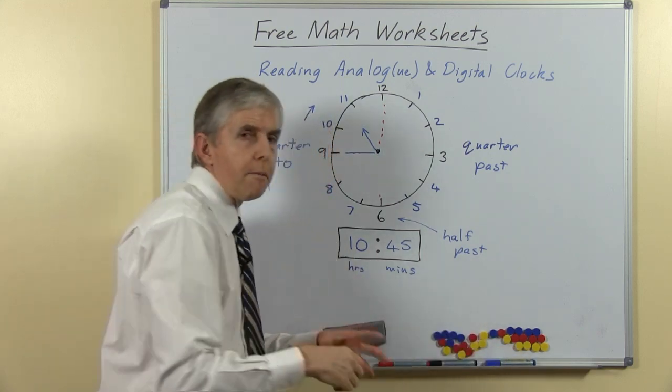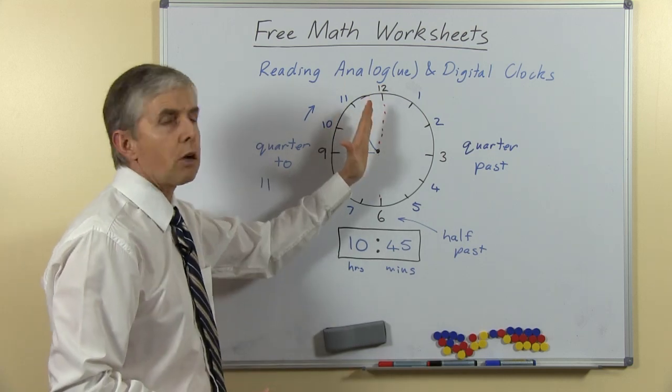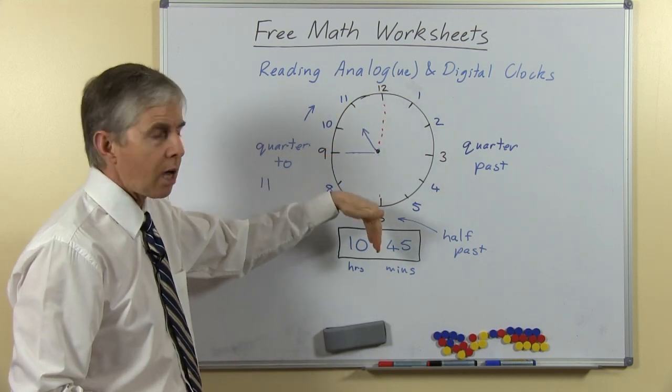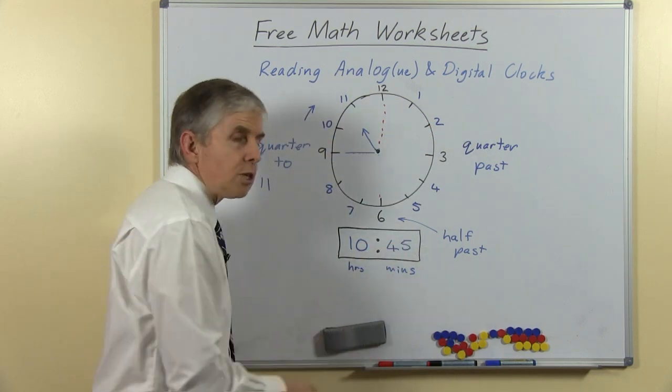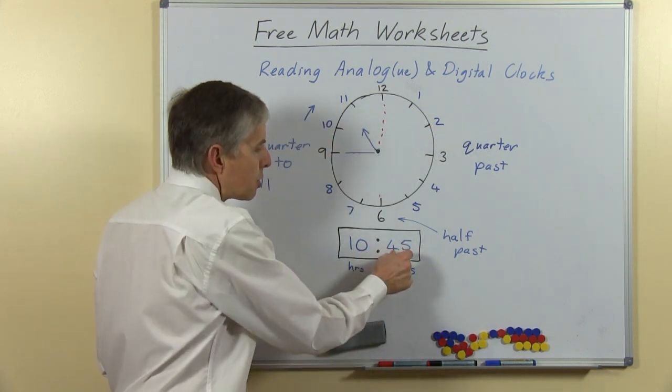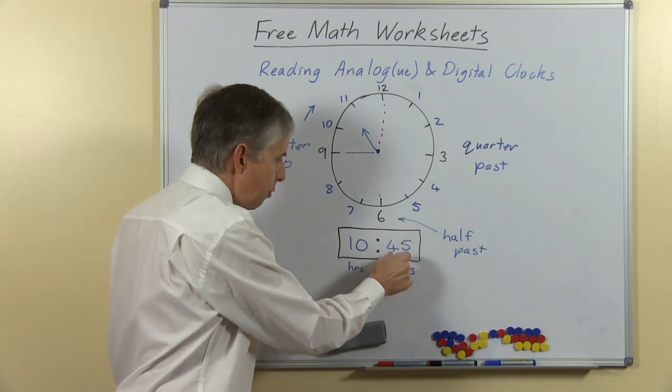So those are the four main times that you need to recognize: the o'clock time, the quarter past, the half past, and then the quarter to the next hour. And on the digital clock the minutes will show 00 or 15 or 30 or 45.